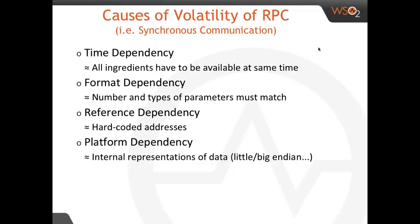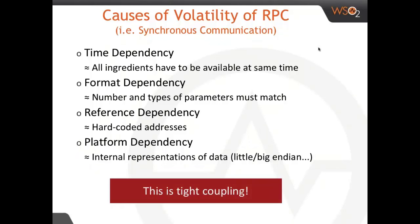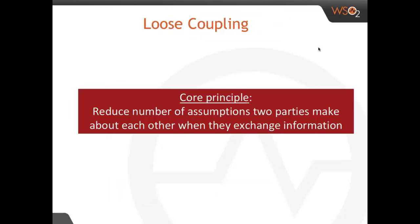And this is tight coupling. If you change the time or if you change parameters, you are basically breaking things. So client and server in synchronous communication are really tightly coupled. Loose coupling reduces the number of assumptions that two parties that want to communicate with each other have when they are exchanging information. This is what we want to have in order to write applications that are very stable, in contrast to when they use synchronous communication.